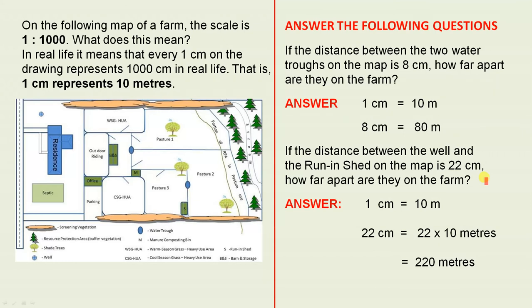Okay. So the well and the run-in shed. So for example, let's find out where the well is. So the well is there. Okay. So that's the well there. And the run-in shed is the S because that says S, so it's there. So from there to there on the map is 22 cm. So if 1 cm equals 10 m, therefore 22 cm equals 22 x 10 m, which is 220 m.